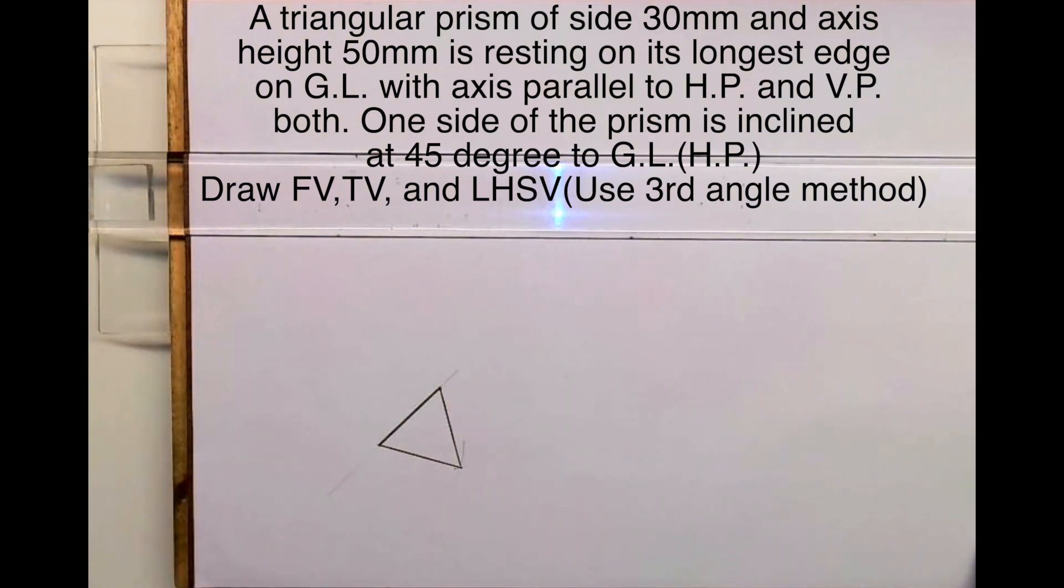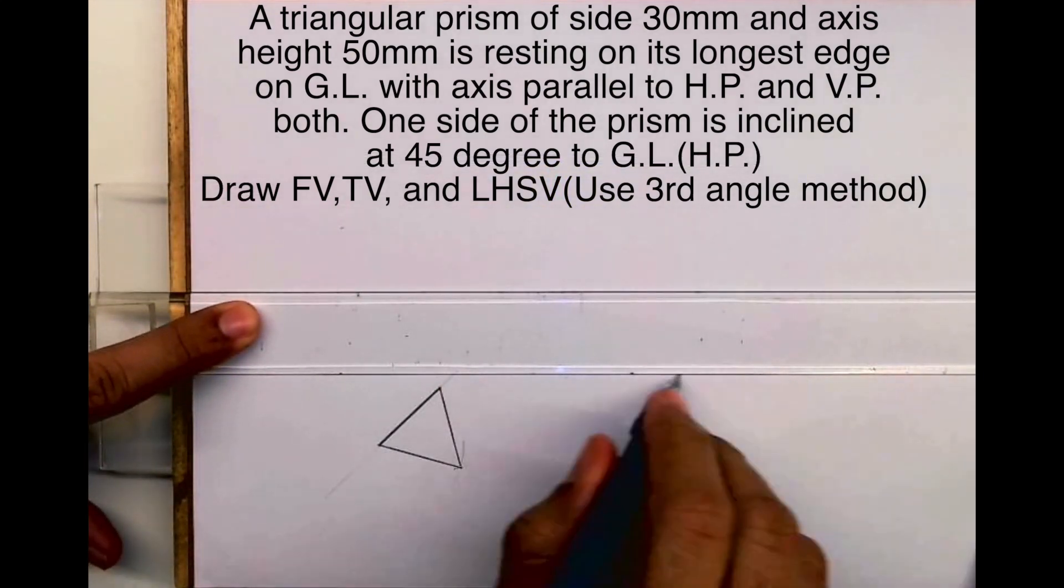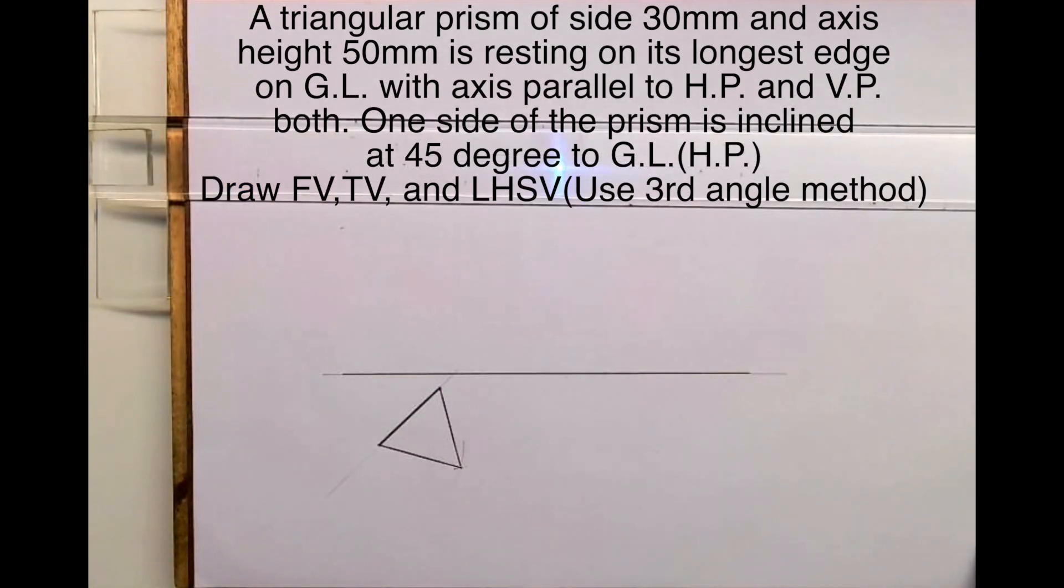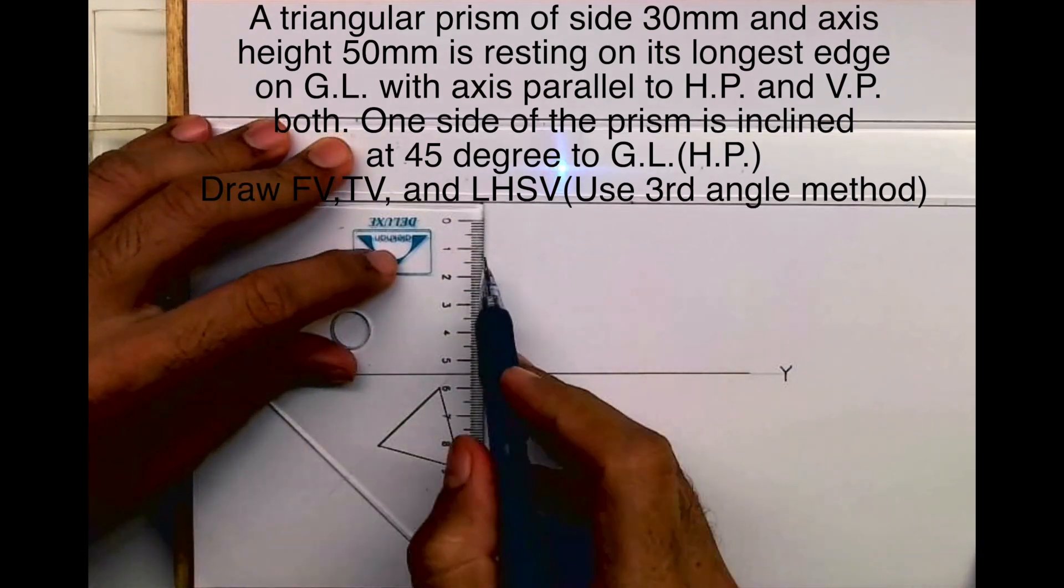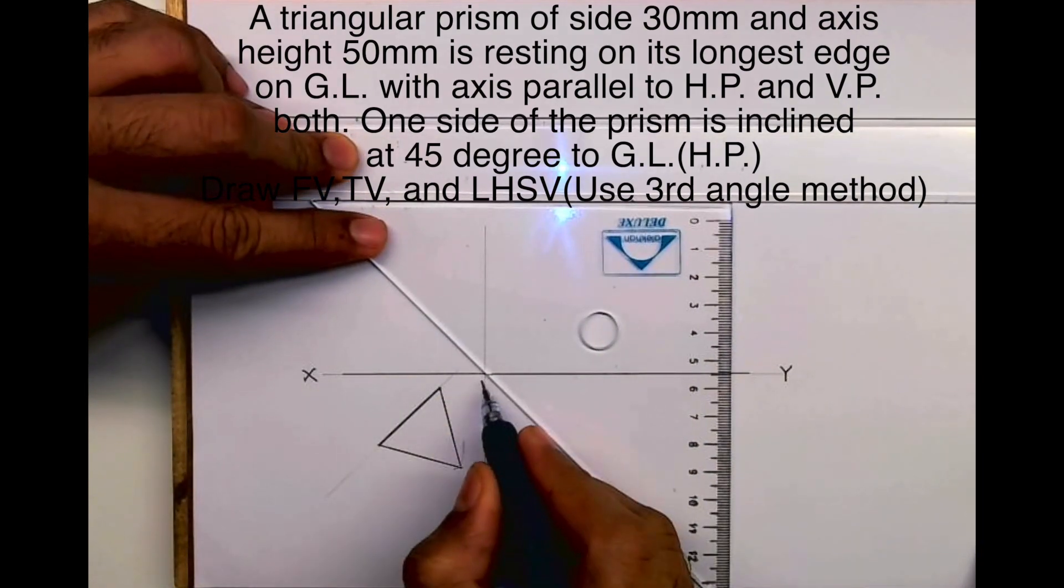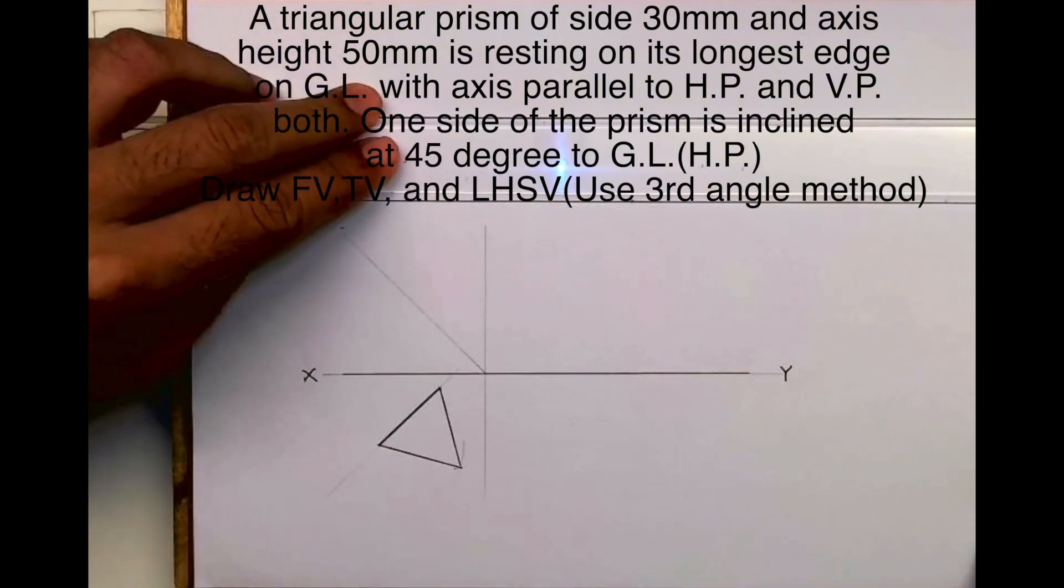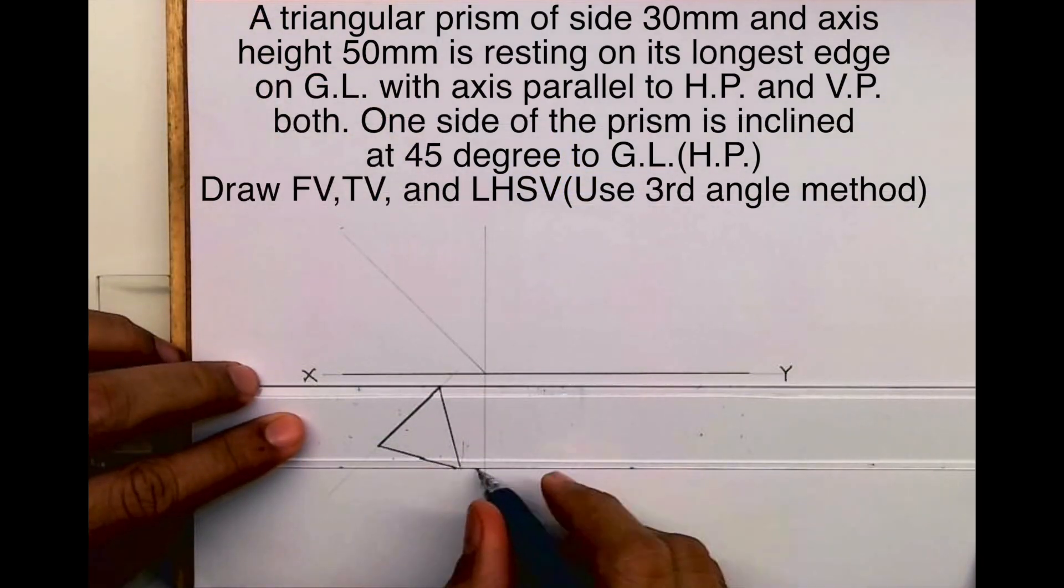After drawing the side view, we'll draw XY. Then we'll start with front view and top view. Now remember, whenever they give GL, that means they're talking about third angle.